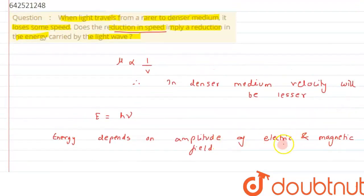So we can clearly see it does not depend upon the refractive index, but it depends upon amplitude of electric and magnetic field. So I hope you have understood the concept. We can say energy will remain the same.